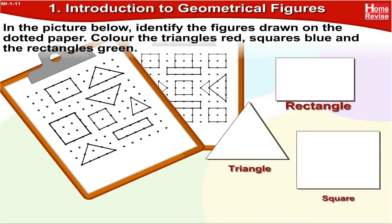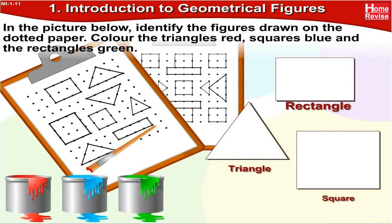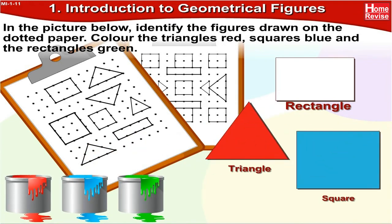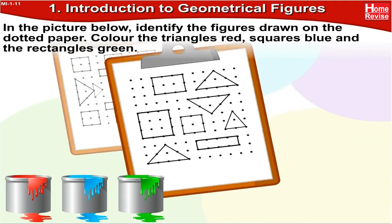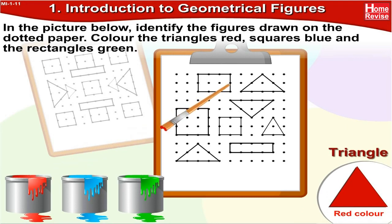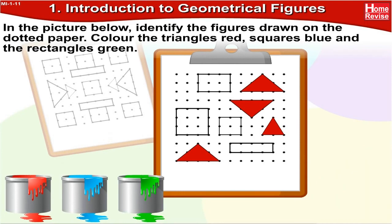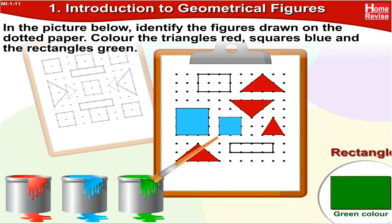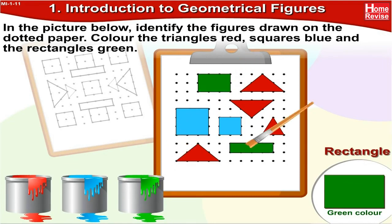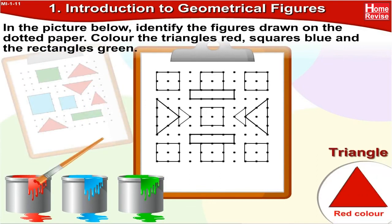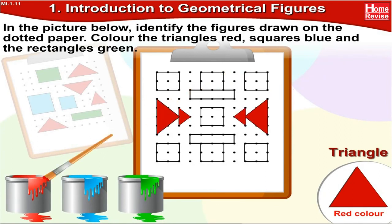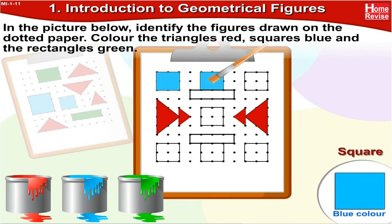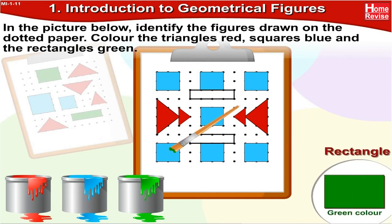In the picture below, identify the figures drawn on the dotted paper. Color the triangles red, squares blue, and the rectangles green. This is a triangle — let us color it red. That is a square — we'll color it blue. Now this is a rectangle — let us color it green. This figure is triangular in shape, so it is a triangle — let us color it red. This is a square — let us color it blue. Now that's a rectangle, so it should be green in color.